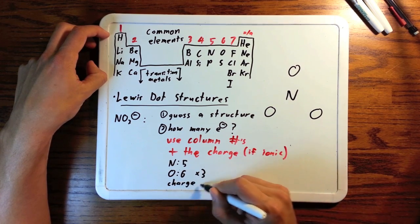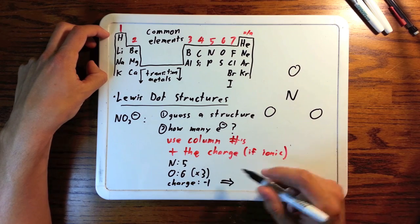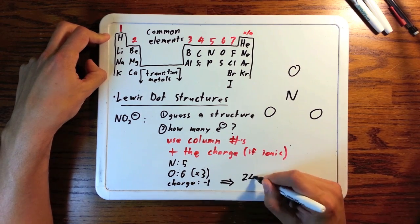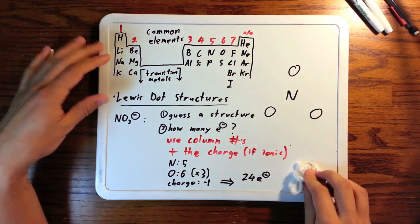For nitrate, nitrogen contributes 5 electrons. Each oxygen contributes 6, so that's a total of 23 electrons. And there's a negative 1 charge overall. That means there's 1 extra electron, 24 electrons total.